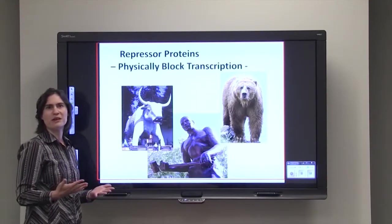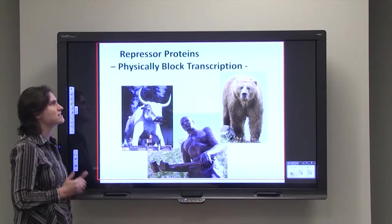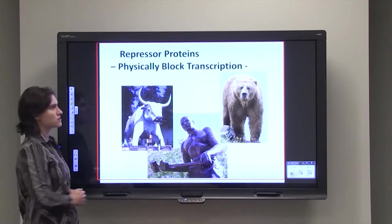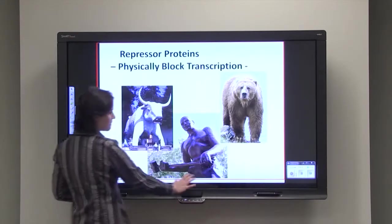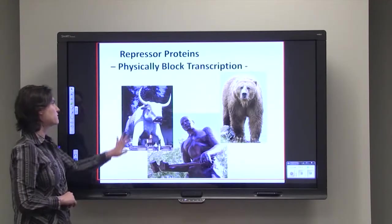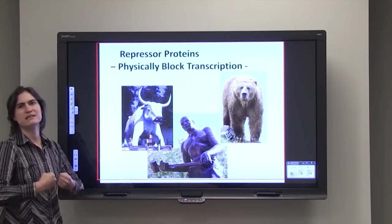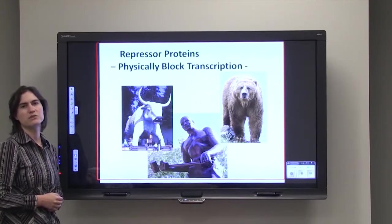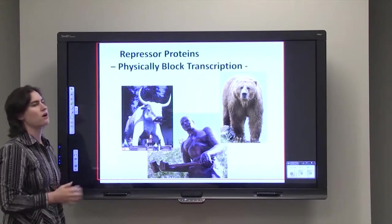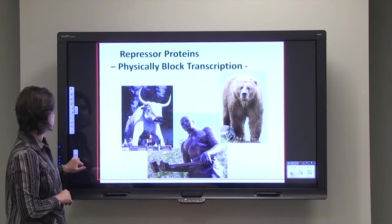So just to drive home that point again, a repressor protein physically blocks transcription. If you've got a grizzly bear, if you've got a big guy with an axe or a hammer, if you've got an ox, it physically blocks that RNA polymerase from doing its job. So those genes aren't going anywhere. Those genes are off, inactive.